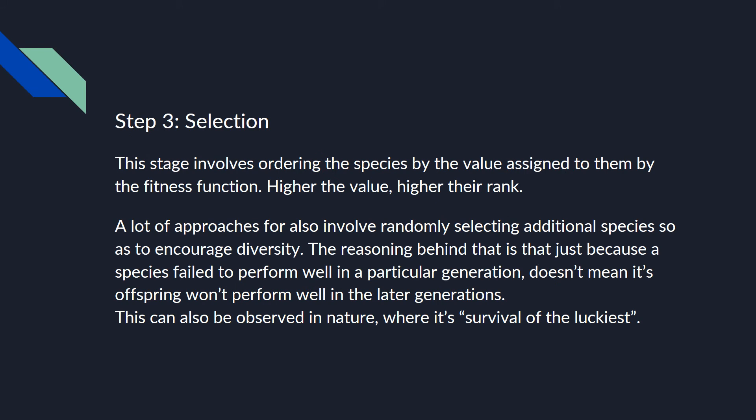The third step is selection. Once the fitness values are assigned, we order them by rank — the higher the value, the higher the rank. We usually select the top 20% of the species. After that, we also additionally select random species to encourage diversity. The reasoning is: a species that didn't perform well in this generation doesn't mean its offspring won't perform well in following generations. This is sometimes observed in nature — survival of a species just by luck, not because they're strong.